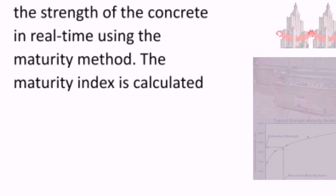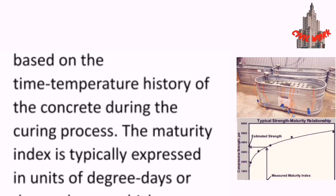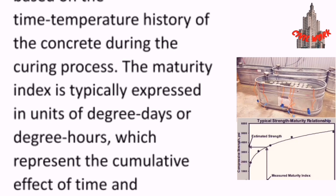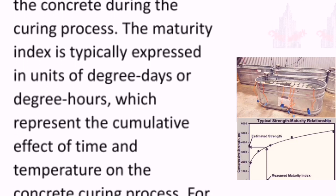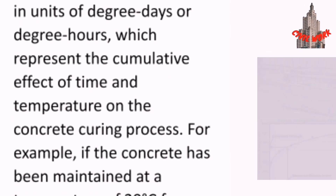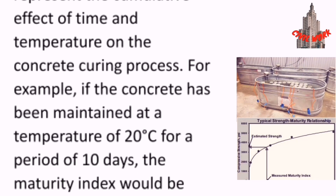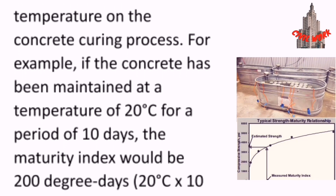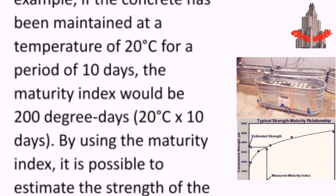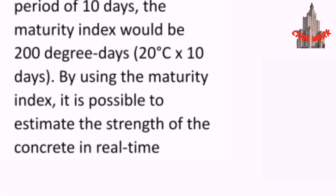The maturity index is calculated based on the time-temperature history of the concrete during the curing process, and is typically expressed in units of degree days or degree hours, which represent the cumulative effect of time and temperature on the curing process. For example, if the concrete has been maintained at a temperature of 20 degrees centigrade for a period of 10 days, the maturity index would be 200 degree days — 20°C multiplied by 10 days.